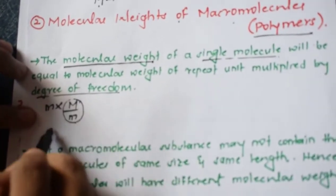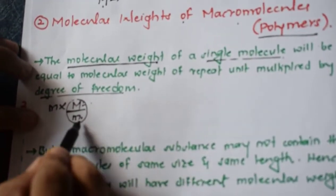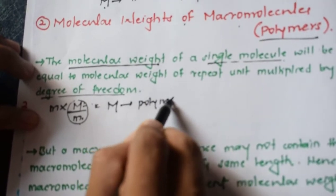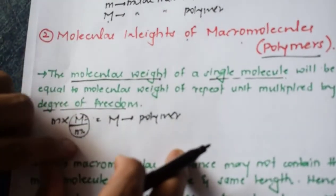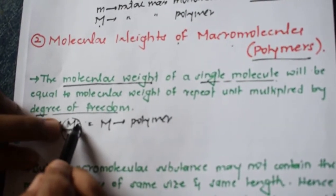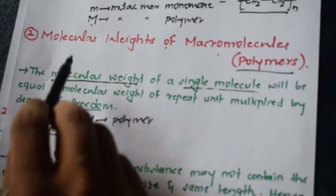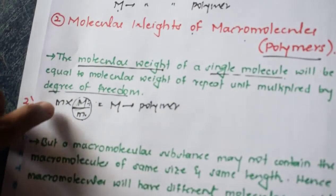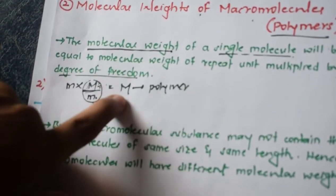The degree of polymerization P is given by capital M divided by small m — that is, the molecular mass of the polymer divided by the molecular mass of the monomeric unit. So capital M equals small m times P. Here, capital M is the molecular mass of the macromolecule and small m is the molecular mass of the monomeric unit. We can determine the molecular weight of a polymer by multiplying the degree of polymerization by the molar mass of the monomeric unit.